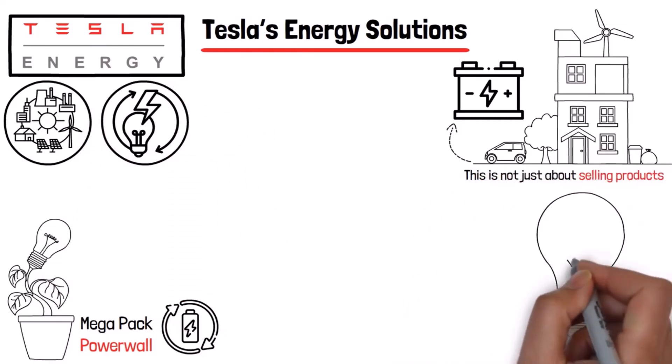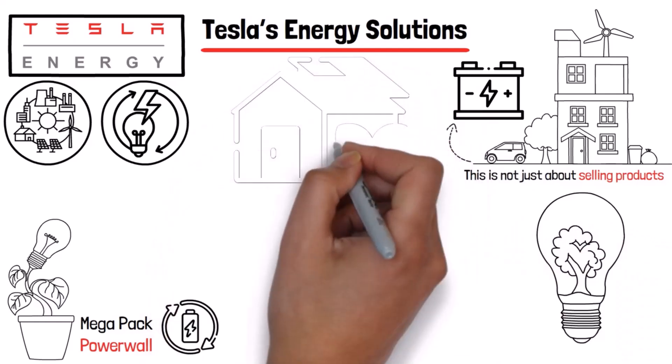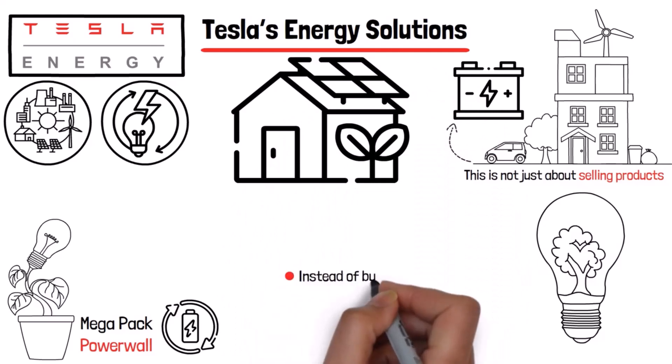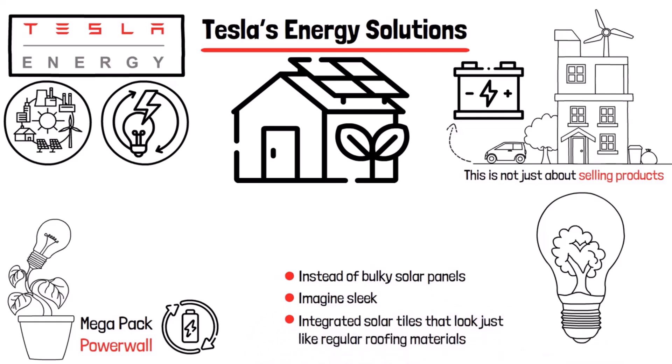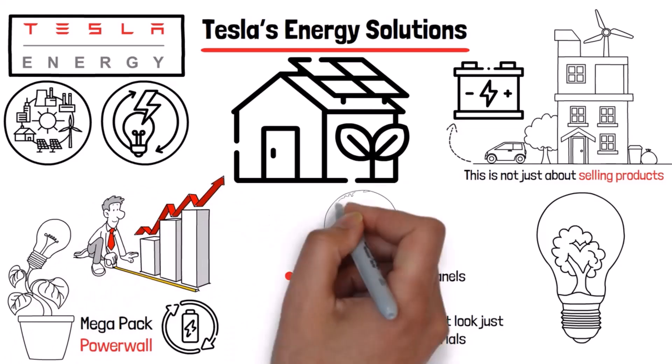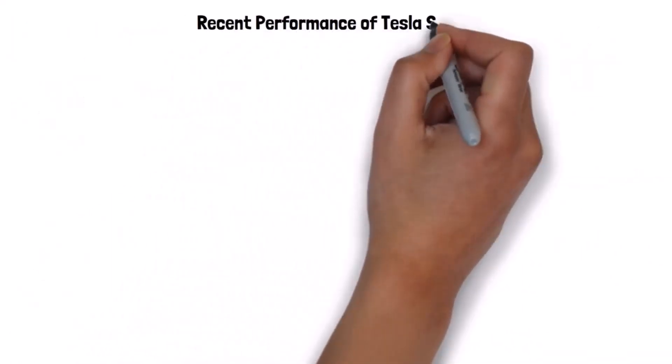Moreover, Tesla's solar roof technology aims to transform how we generate power at home. Instead of bulky solar panels, imagine sleek integrated solar tiles that look just like regular roofing materials. This innovation could significantly increase solar adoption rates, contributing to a greener planet.